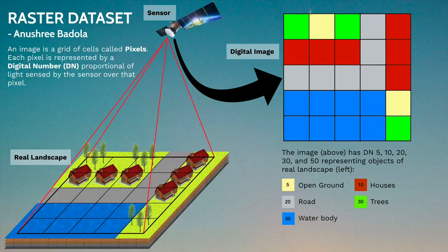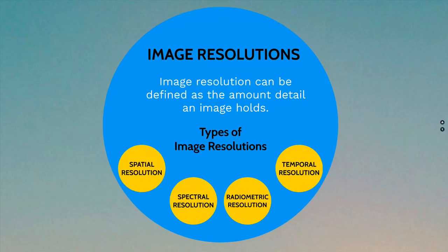Now we will see what kind of details we can get from our captured image. For that we will learn about image resolution. The resolution of an image refers to the potential detail provided by the imagery. In remote sensing, we refer to four types of resolution: spatial, spectral, radiometric, and temporal.